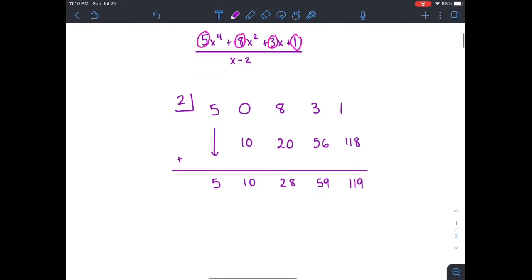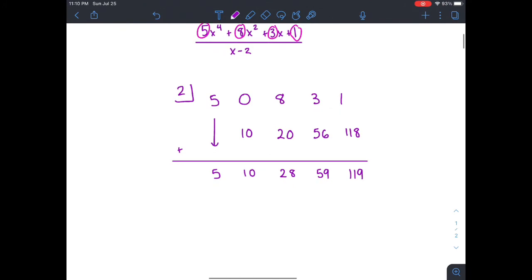So now all we have to do is add in the terms. So now we're left with the coefficients 5, 10, 28, 59, and 119. And now we just have to write in 5x cubed plus 10x squared plus 28x plus 59 plus 119 over x minus 2.